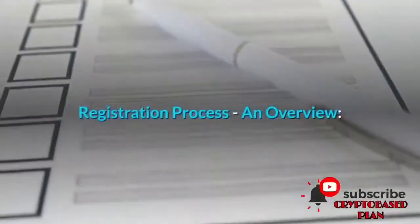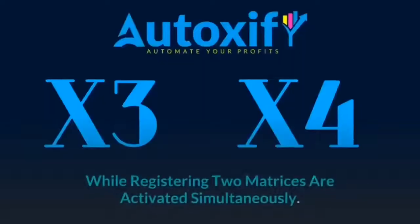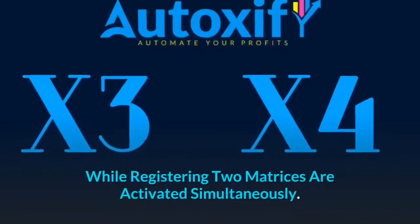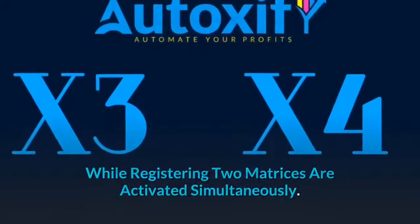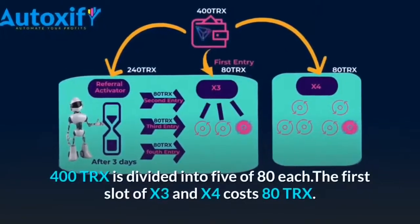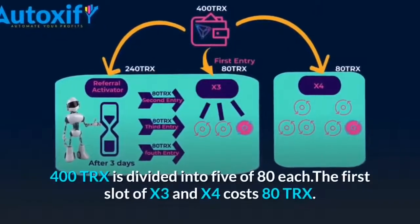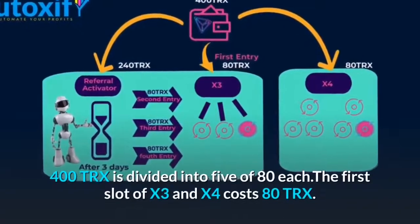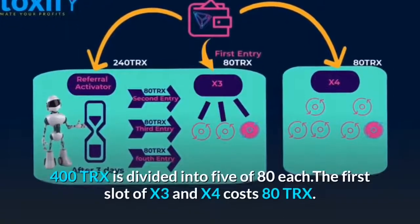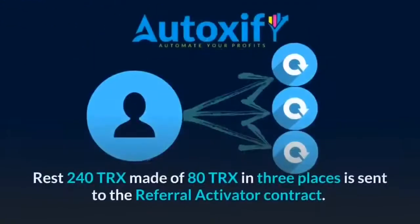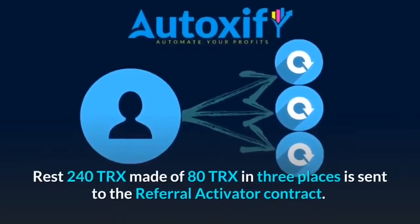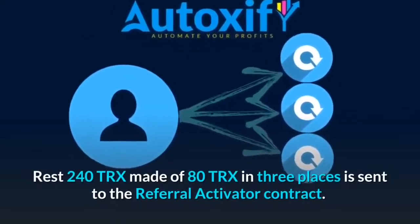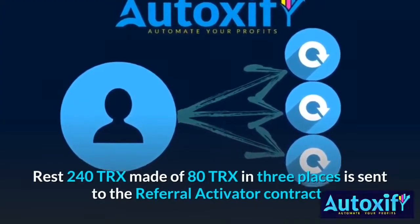Registration process overview: while registering, two matrices are activated simultaneously. 400 TRX is divided into 5 portions of 80 TRX each. The first slot of X3 and X4 each costs 80 TRX.